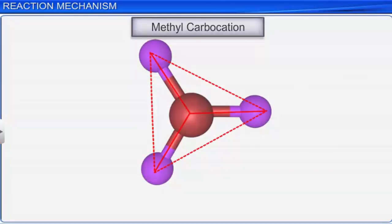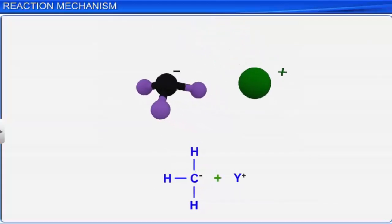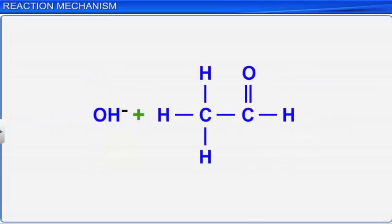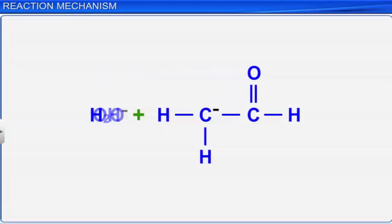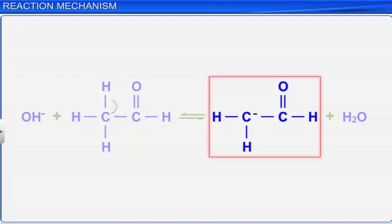There are also heterolytic cleavages where the carbon gets the shared pair of electrons. For example, the removal of the hydrogen ion in the presence of a base from the methyl part of an acetaldehyde molecule leaves both the carbon-hydrogen bond electrons on carbon. Such chemical species bearing a negative charge on the carbon atom and possessing 8 electrons in their valence shell are called carbanions.